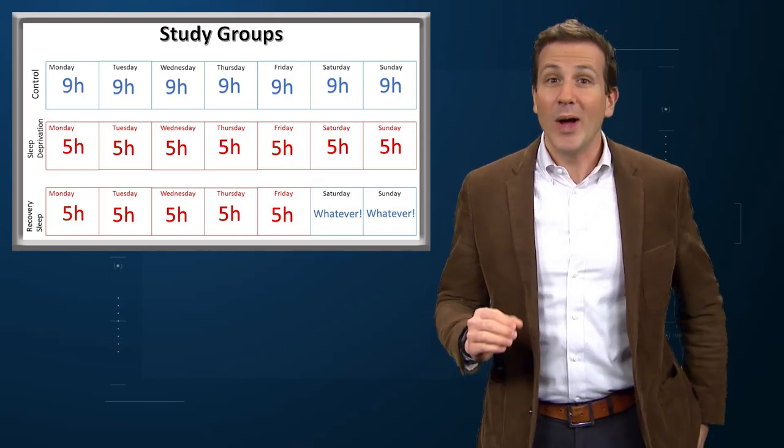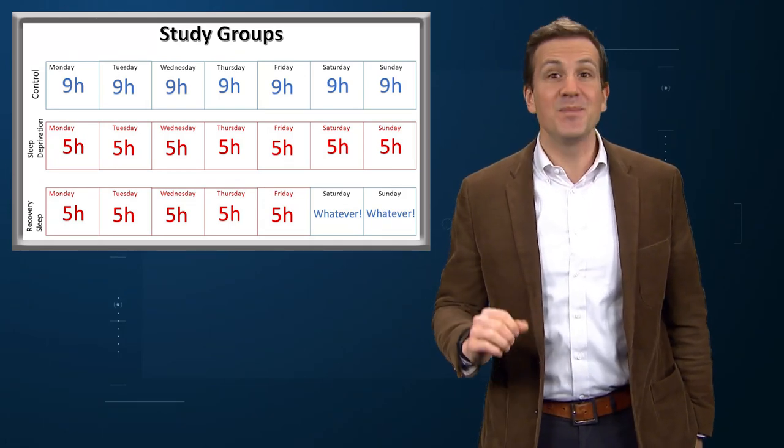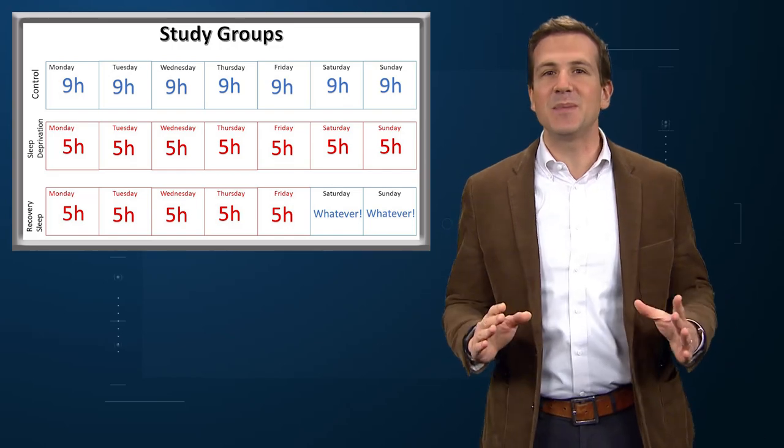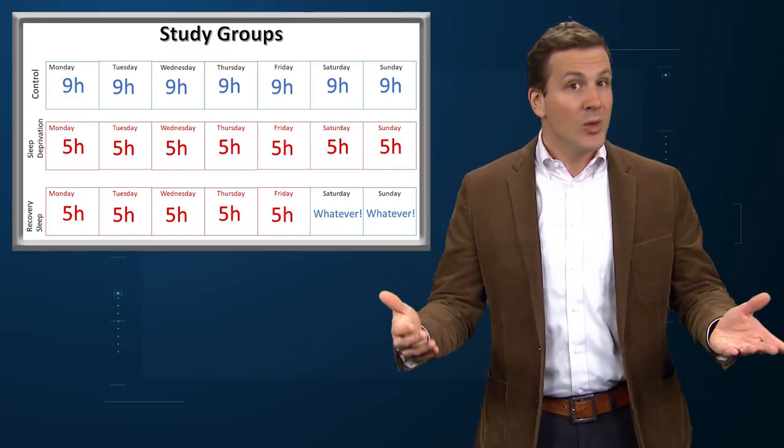The control group was put in bed for nine hours a night, which sounds lovely. One group was randomized to sleep deprivation – five hours in bed at night. The final and most interesting group was randomized to sleep deprivation, but they were allowed to sleep in on the weekend – so-called recovery sleep.